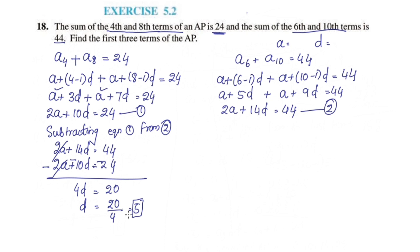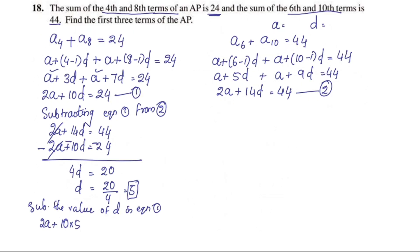We will substitute the value of d into equation 1. Equation 1 is 2a plus 10d equals 24. Since d is 5, we get 2a plus 10 into 5 equals 24, so 2a plus 50 equals 24, and 2a equals 24 minus 50, giving 2a equals negative 26.